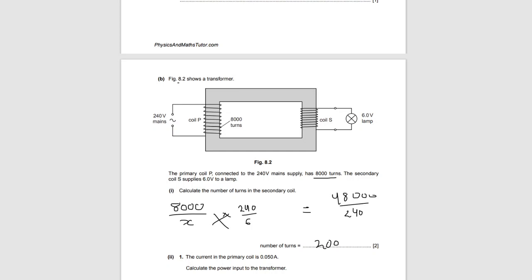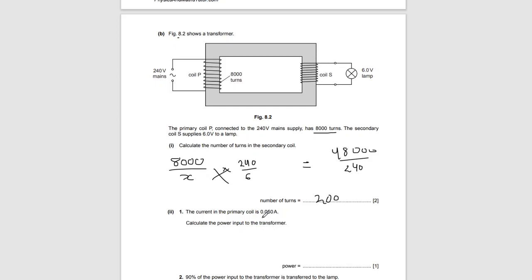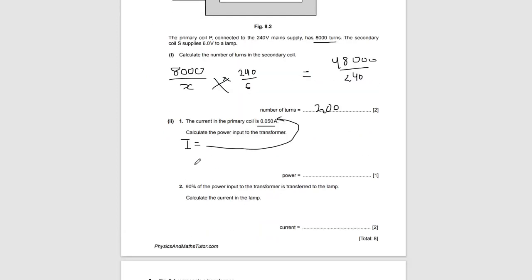Cross-multiplying: 8,000 times 6 equals 48,000, then divide by 240, giving 200 turns as the answer. The next question says the current in the primary coil is 0.05 amperes — calculate the power input to the transformer. Power equals voltage times current. The primary voltage is 240 volts, so 240 times 0.05 equals 12 watts.